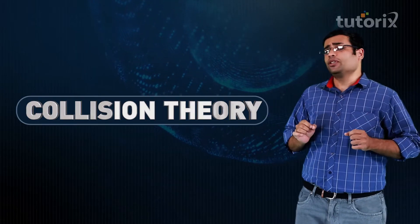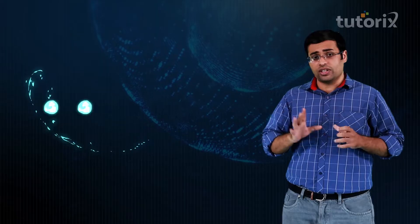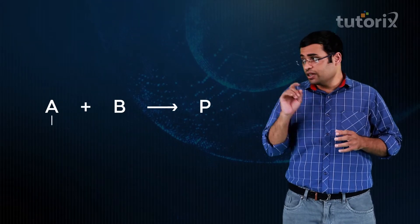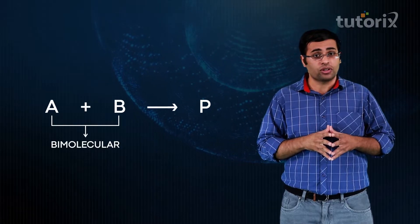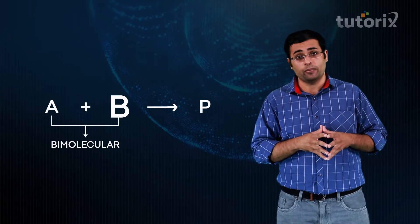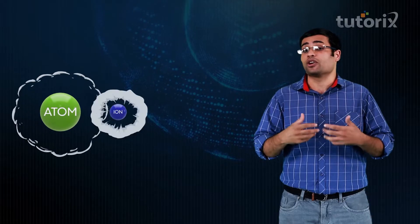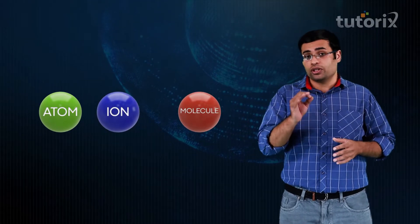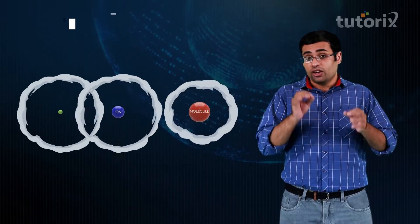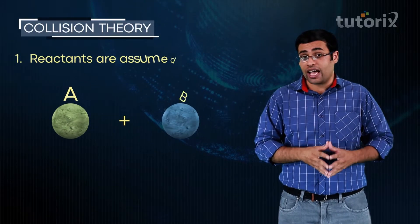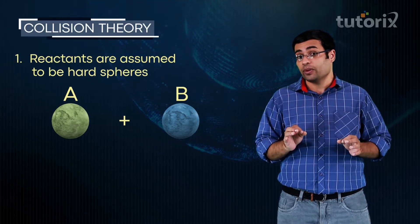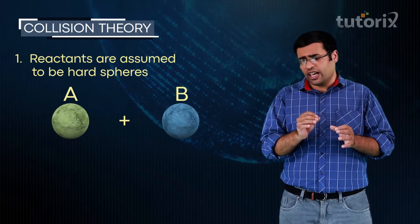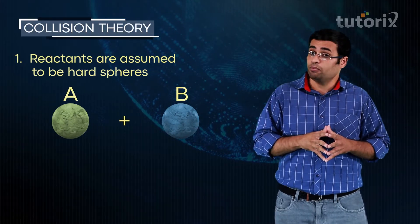To understand collision theory, let us take an example of this reaction where A reacts with B to form product P. This is a bimolecular reaction occurring between A and B, and A and B can be anything from atoms, ions to molecules. The first point of collision theory tells us that reactants have to be assumed as hard spheres — meaning that reactants A and B will behave like rocks A and B.